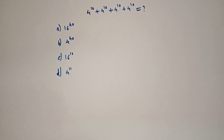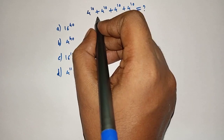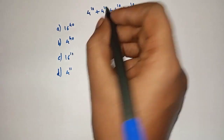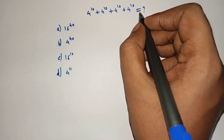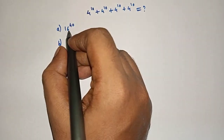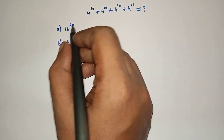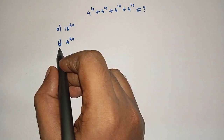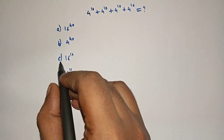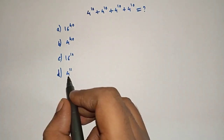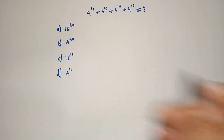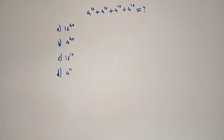Hello friends, welcome. The problem is: 4 raised to 10, plus 4 raised to 10, plus 4 raised to 10, plus 4 raised to 10 equals what? Option A: 16 raised to 40. Option B: 4 raised to 40. Option C: 16 raised to 10. Option D: 4 raised to 11. So let's solve.